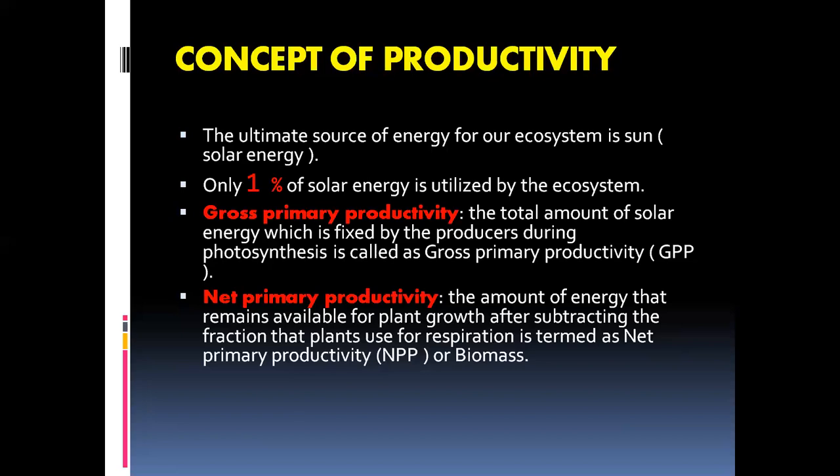To summarize: gross primary productivity is the total energy generated through photosynthesis in the producers. From that, when we subtract the energy producers use to fulfill their own requirements, the remaining energy is called net primary productivity. This remaining energy is what the producers store or transfer to the next trophic level.